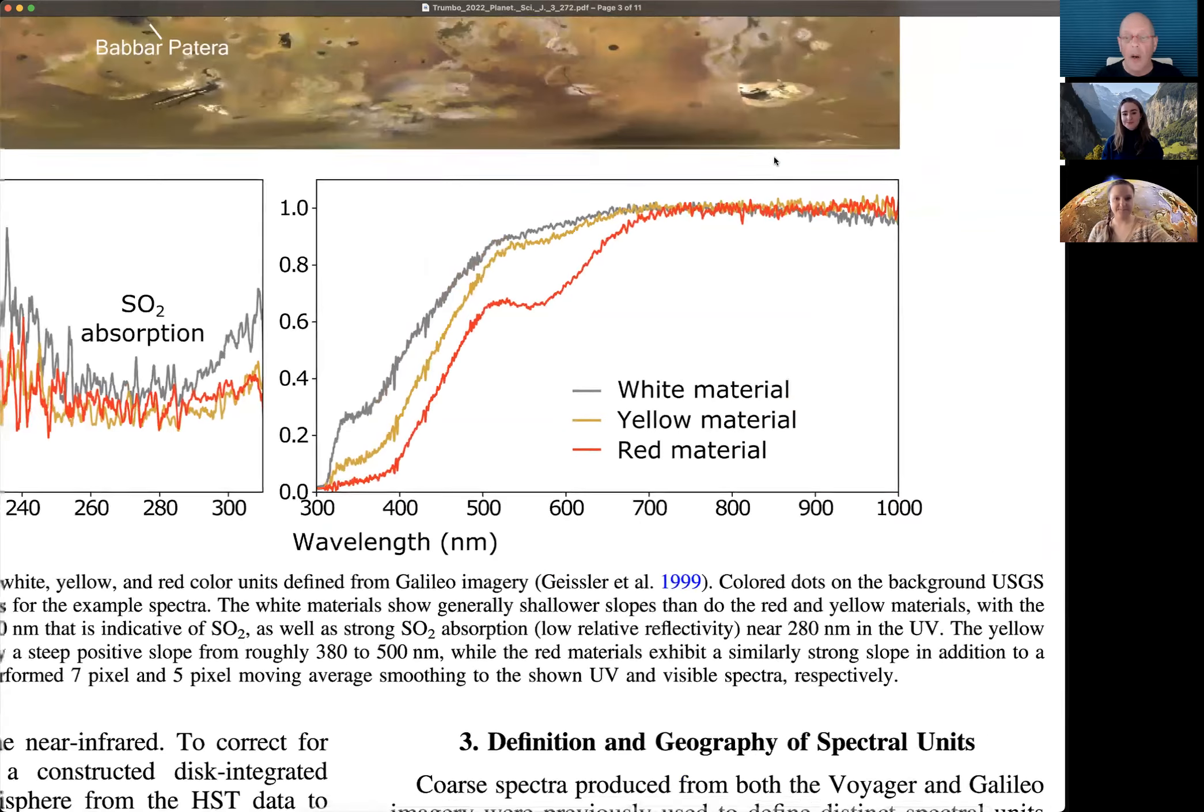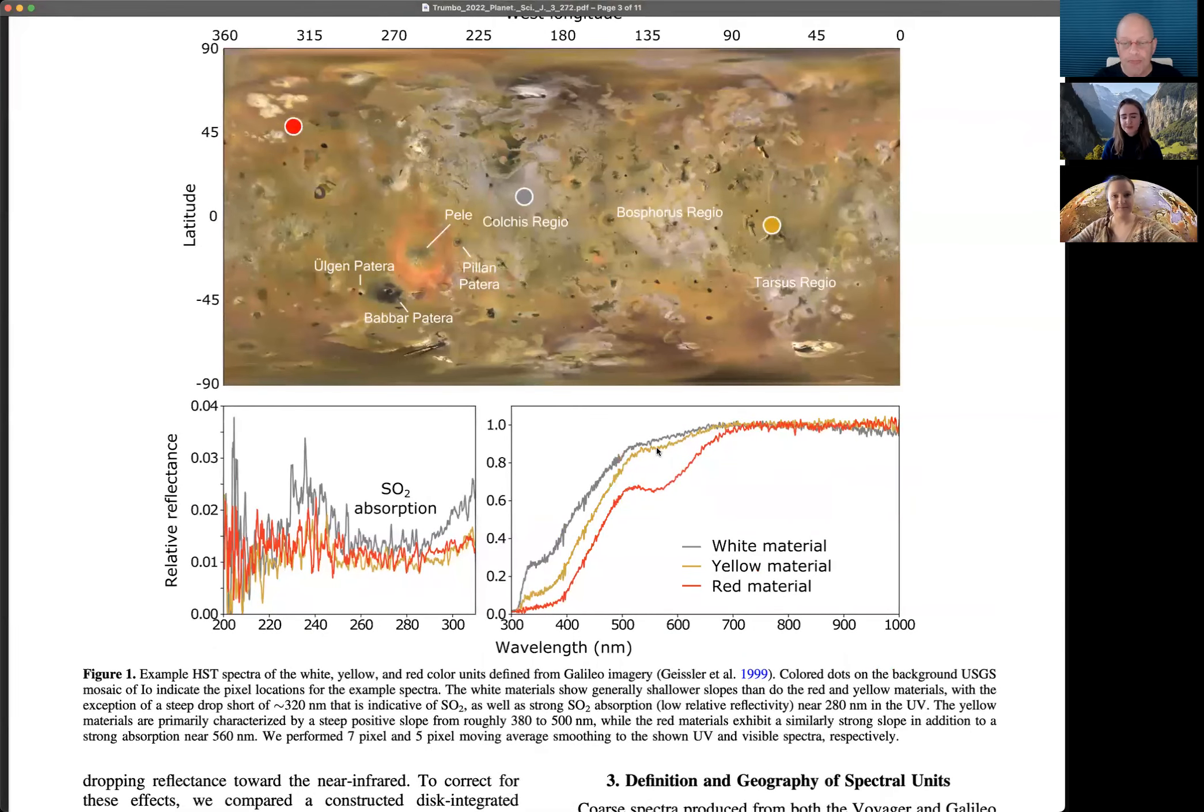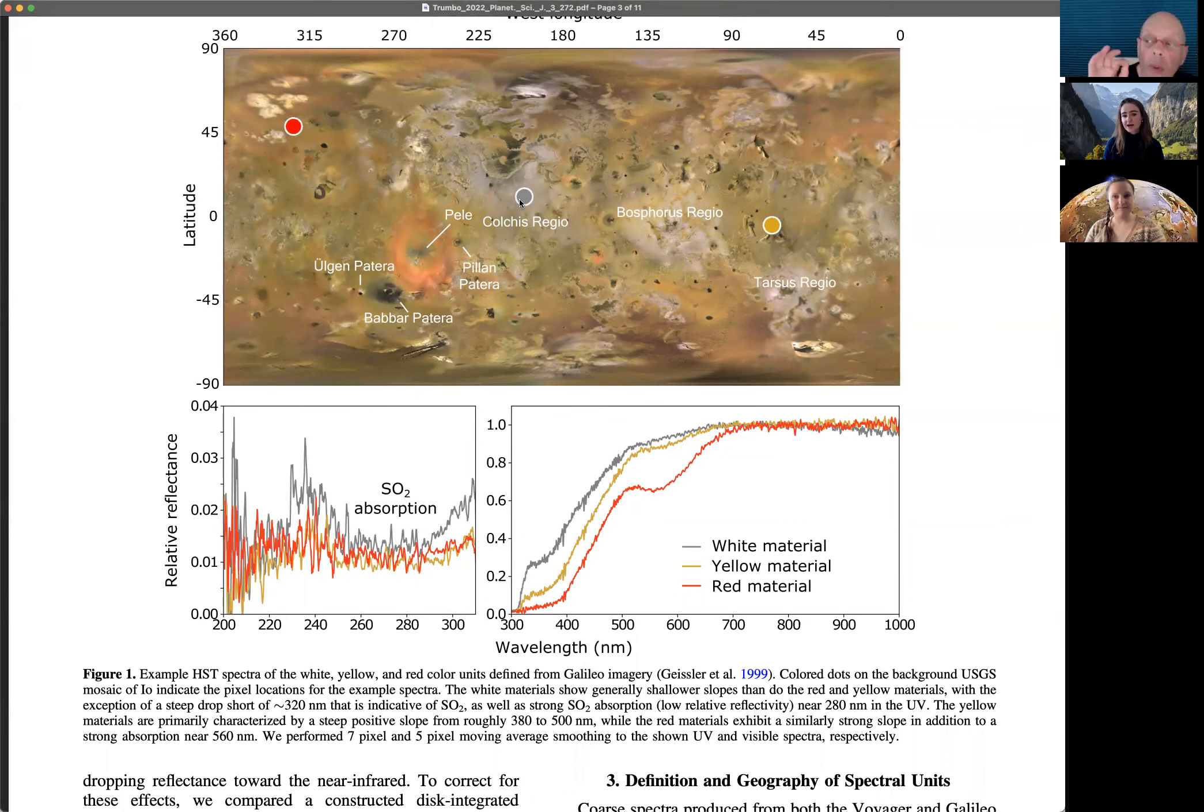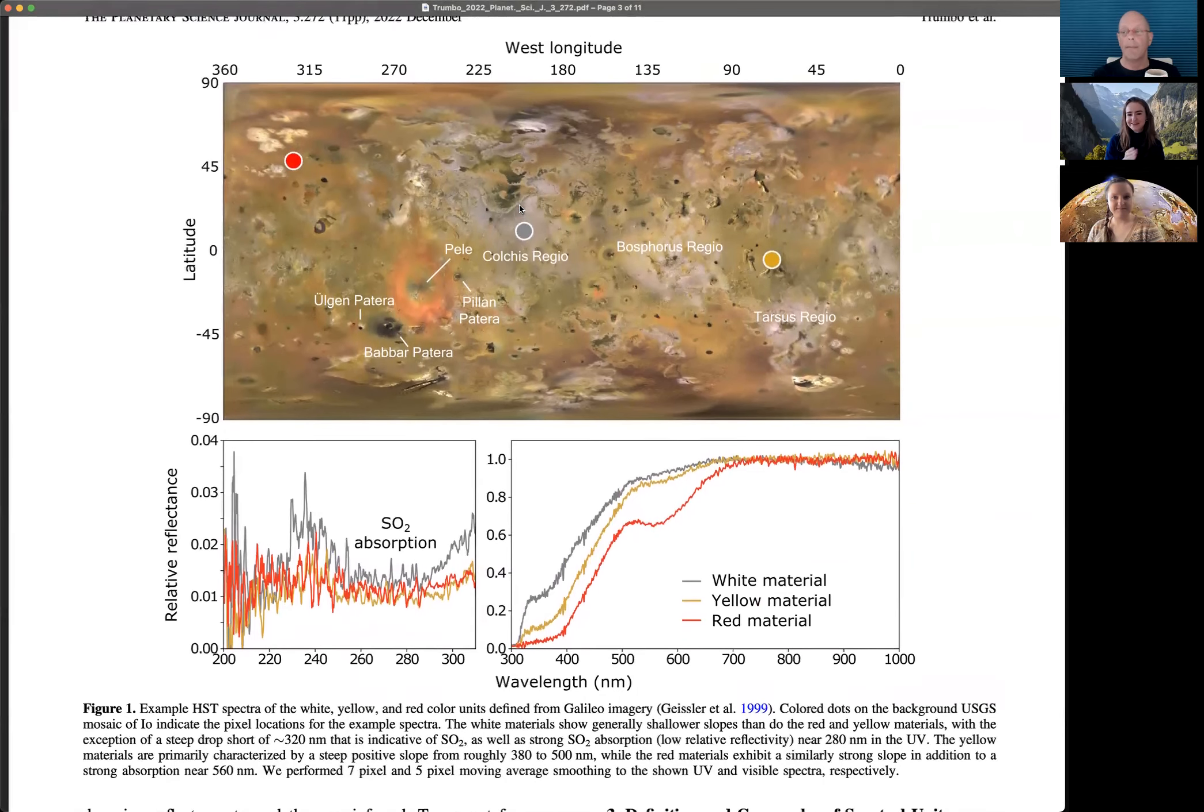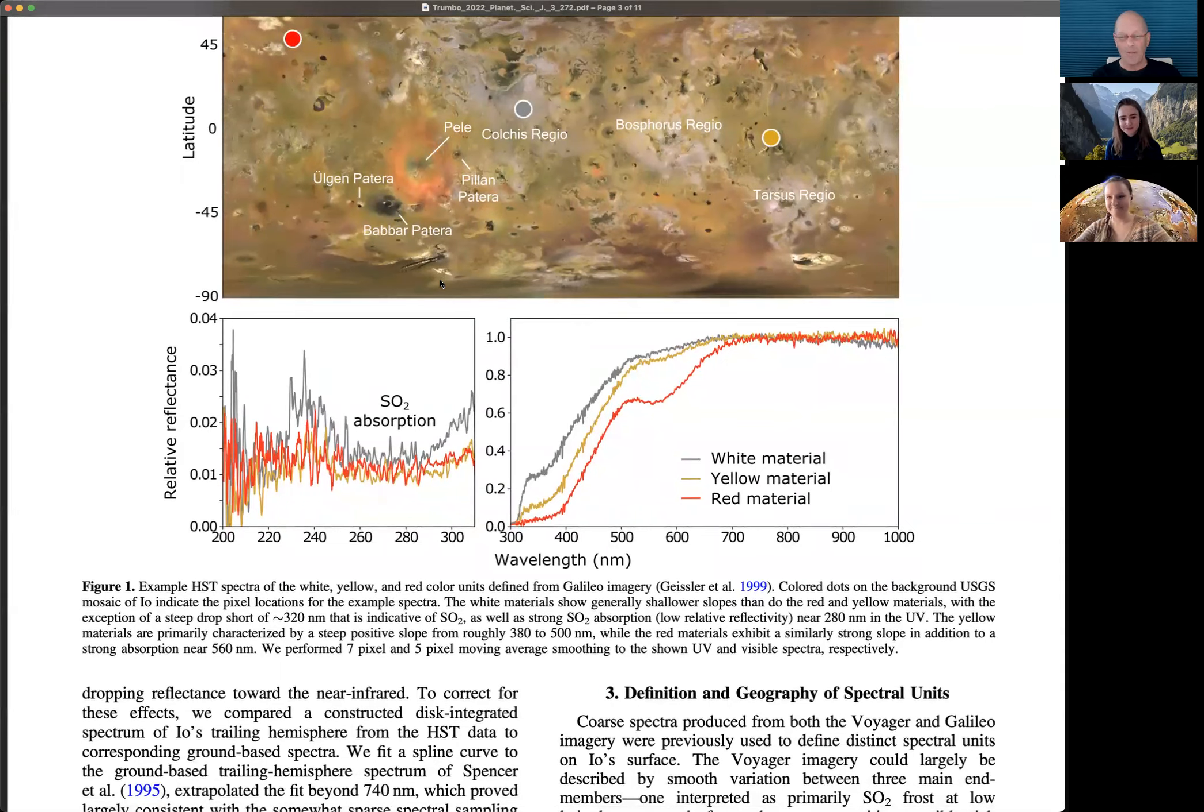Our first approach was to do something similar to what had been done at the broadband spectroscopy scale from Galileo, which was to try to identify spectral end members, see if we come up with the same answer, or if having this more rich spectral information gave us additional end members, something new that we could learn. I'm going to turn it over to Riley for this next section, because this is a really cool method that she developed.